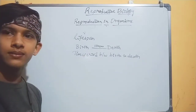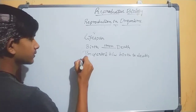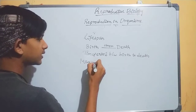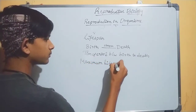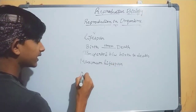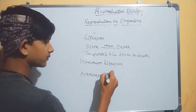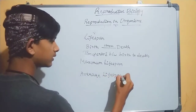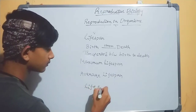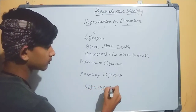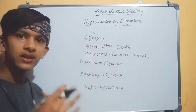Next, we will discuss three terms: maximum lifespan, average lifespan, and life expectancy. So in these three terms, there are specific meanings. Life span is now complete.